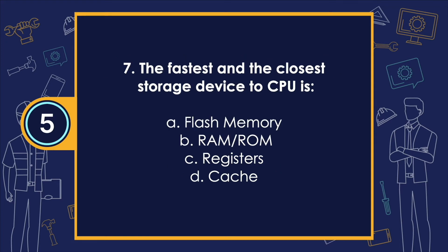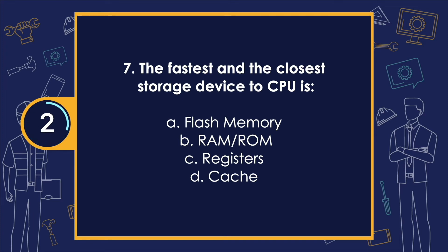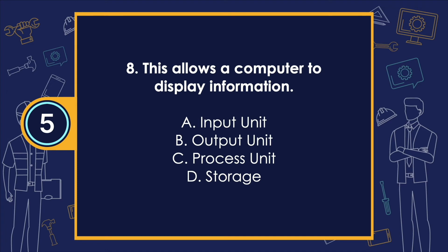Number 7: the fastest and the closest storage device to the CPU is? The correct answer is letter D — cache.